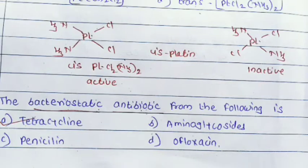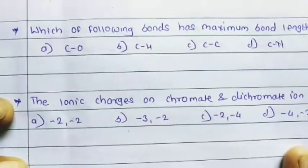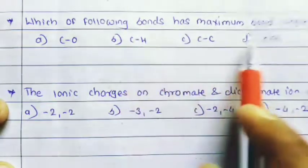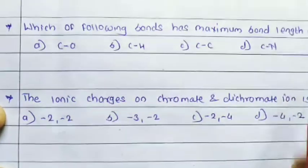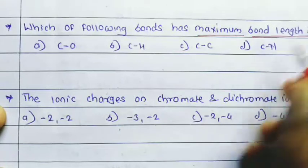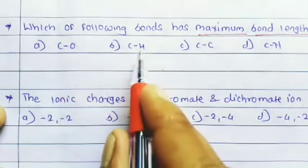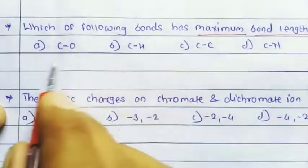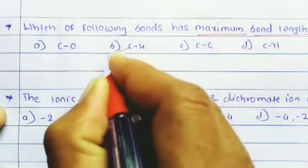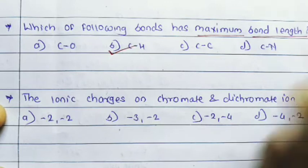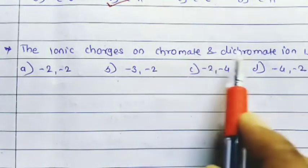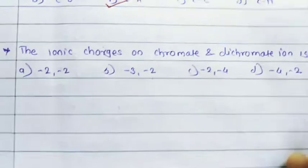Next question: which of the following bonds has the maximum bond length? Options: C=O, C-H, C-C, and C≡C. Out of these four, C-H has the maximum bond length. Also, the ionic charge on chromate and dichromate ions is asked.